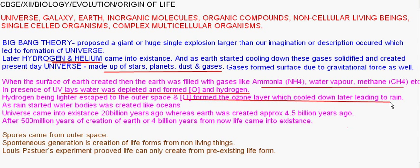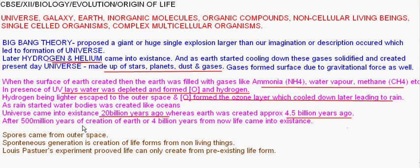Raining occurred for a long period of time. As a result, all the water bodies like oceans, rivers, and seas were created. The universe came into existence approximately 20 billion years ago, whereas earth was created approximately 4.5 billion years ago. The first life form came into existence after 500 million years of the creation of earth, or about 4 billion years ago from now.